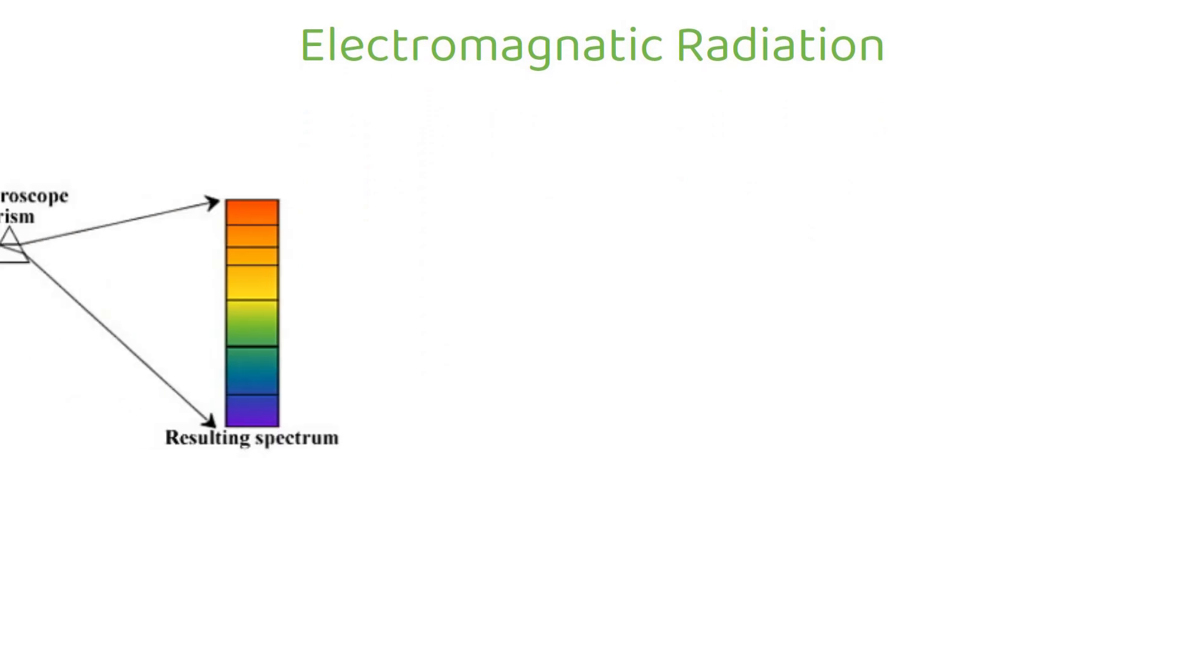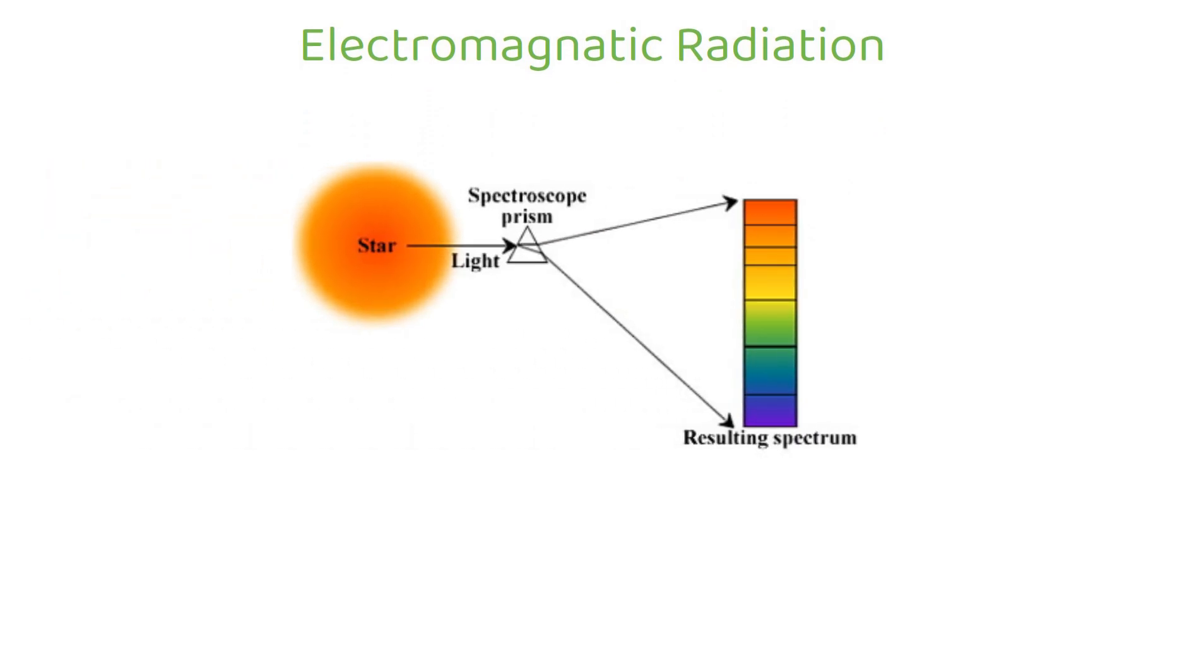Let's simplify this. We all learned in our school that when white light passes through a prism, it forms many different colors. These different colors are called spectrum and each color is known as bands or spectra.